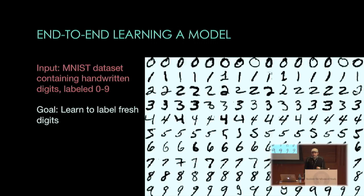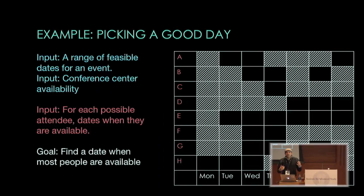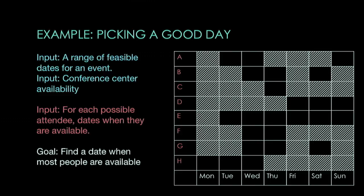We'll get there, but let's start with something much simpler: a very simple problem of picking a good date for an event. Imagine you want to organize a conference like this one. You have some range of feasible dates and you know the conference center availability — these parts of the input are public, not sensitive. In addition, for each attendee, you have access to their calendar given in a private fashion. You don't want to release their calendars, but you want to find a date when most people can make it.